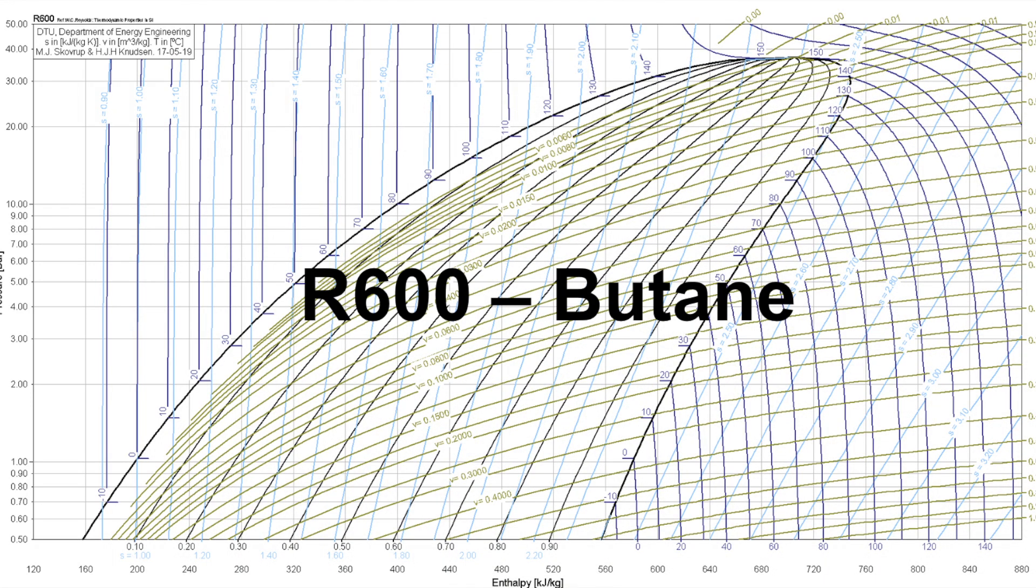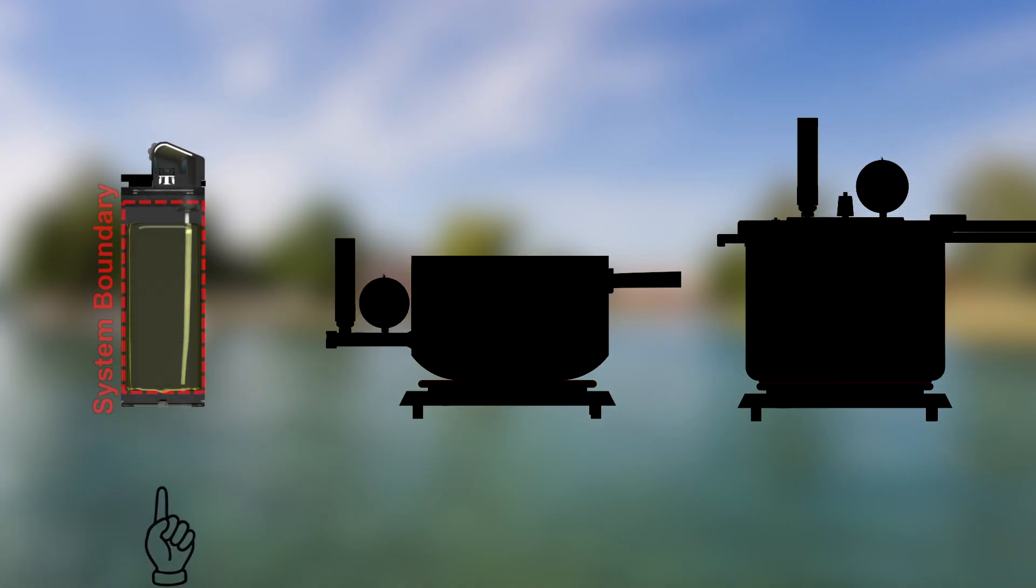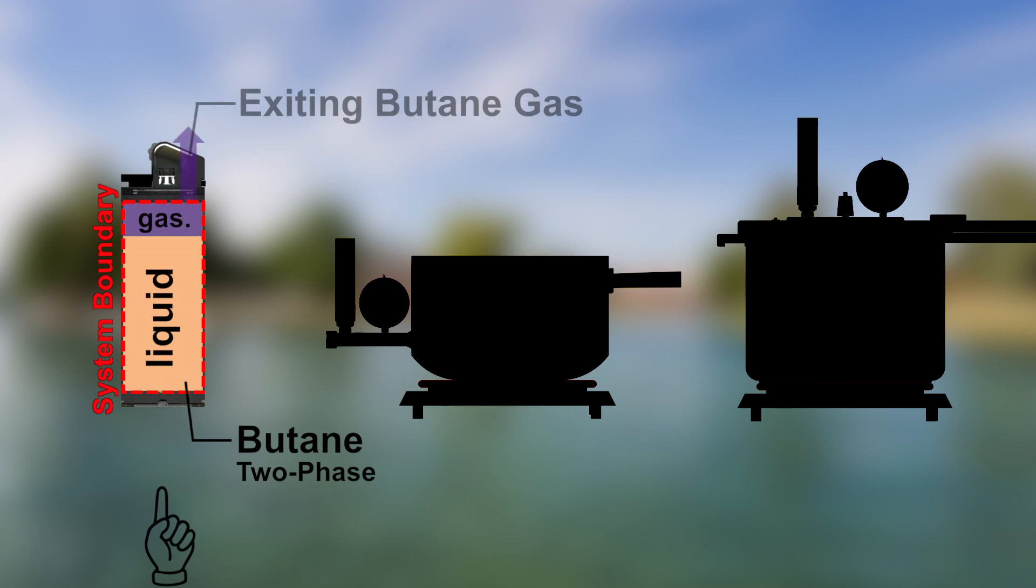Butane, called R600 in the refrigeration business, is mainly known for its use as gas for lighters. The Pressure Enthalpy Diagram allows us to explain how they operate.